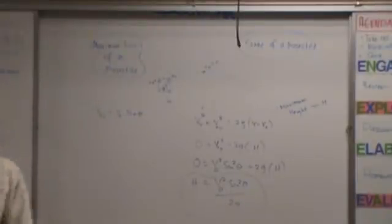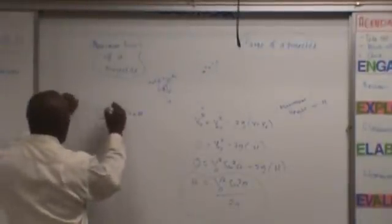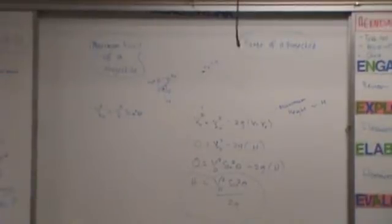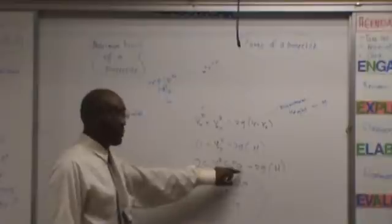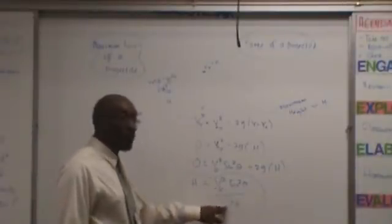Why is it sine squared? Because everything is squared — V₀ is squared, so if you square V₀Y, you have to square both V₀ and sine theta. Can we use this for something that goes straight up? If something goes straight up, the angle is 90 degrees. The sine of 90 degrees is one, so everything simplifies to V₀ squared over 2G. It works — you just put 90 degrees for the angle and it still works out.